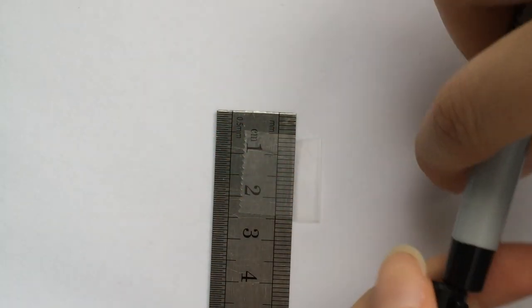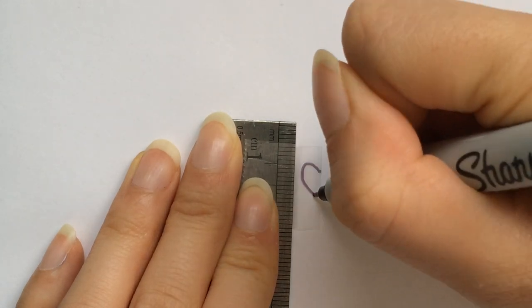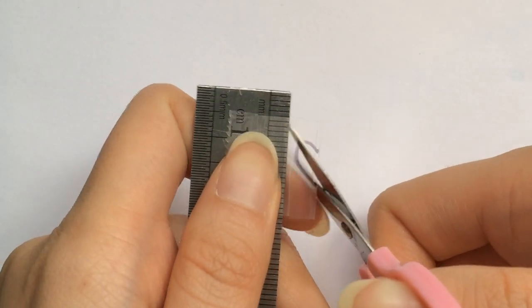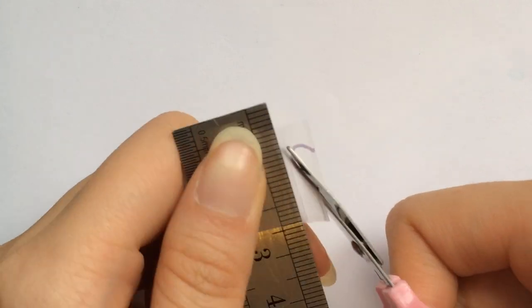I'm going to use a sharpie to draw half of a heart on the tape. And taking my sewing scissors, I'm just going to cut along my marked line.